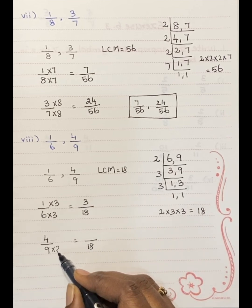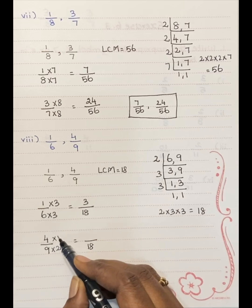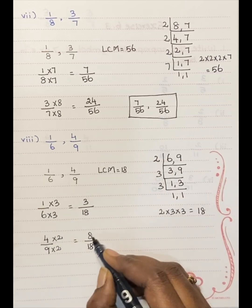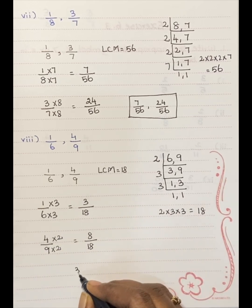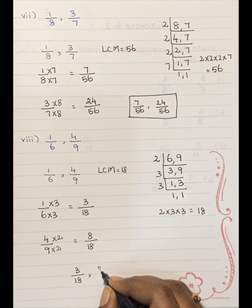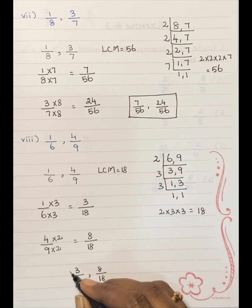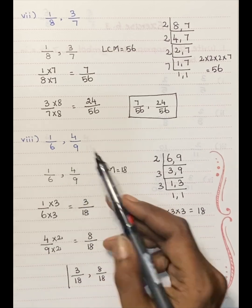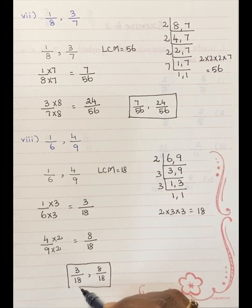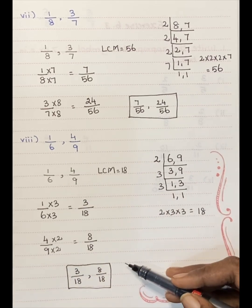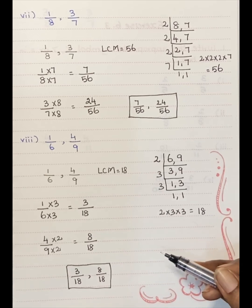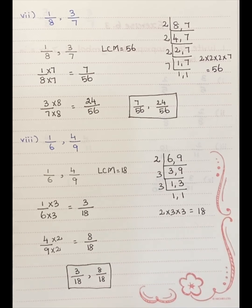So 4 twos are 8. The answers are 3 by 18 and 8 by 18. I hope you understood this exercise. Let's meet in the next video. Thank you all.